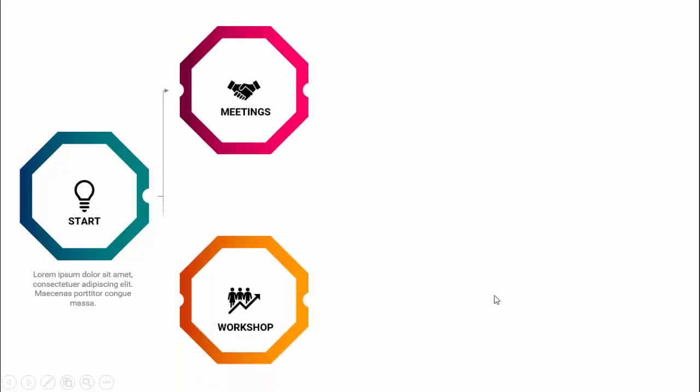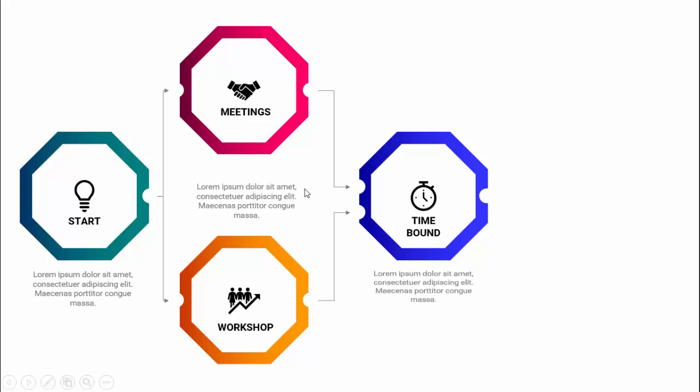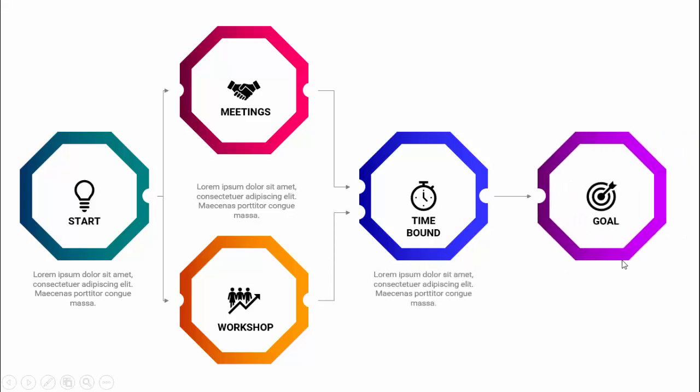In today's tutorial I'm going to show you how to create a five-step process flow diagram in PowerPoint. When I click you can see the first option comes with a gradient fill, an icon, and text with 'Start'. You can add detailed text here. When I click next it shows two options like meetings and workshops, then a time-bound step, and finally the goal we are aiming for.